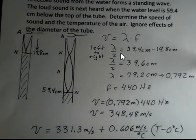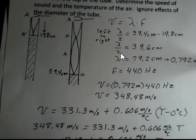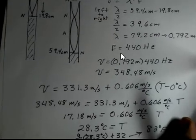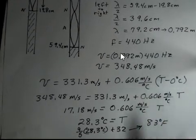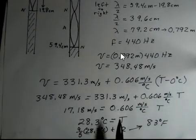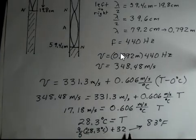348.48 meters per second was the speed of sound we determined. There's our base number plus 0.606 times the temperature in degrees Celsius. We can subtract these two meters per second values. Then divide by the coefficient in front of T. And slide this up so you can see what I'm talking about. And I came up with 28.3 degrees Celsius for the temperature. Convert that to Fahrenheit, it's about 83 degrees Fahrenheit.